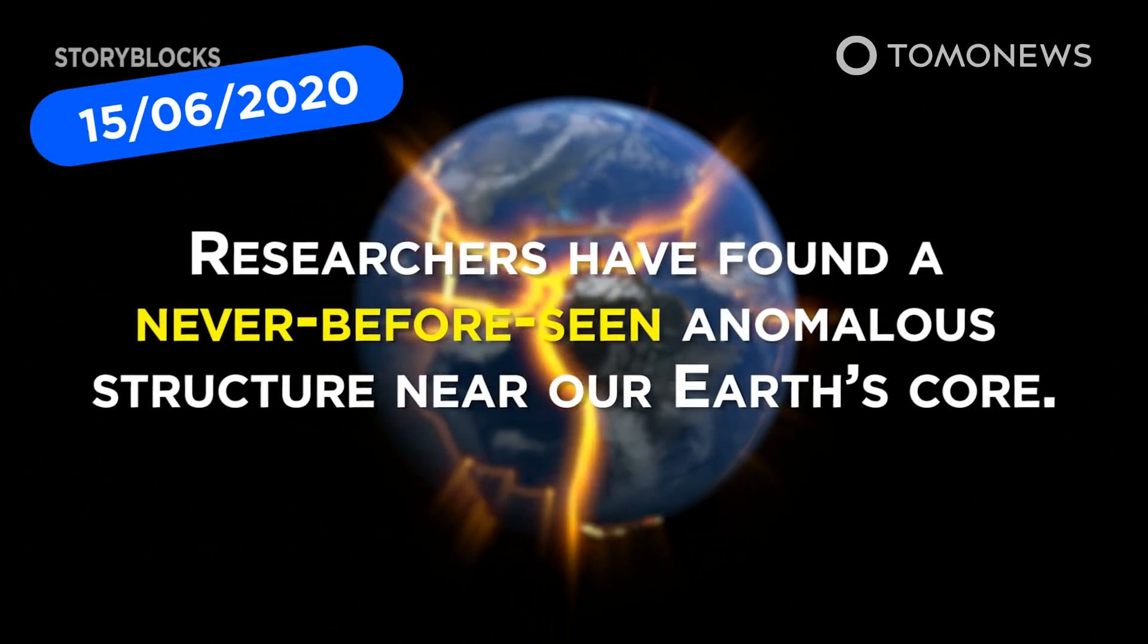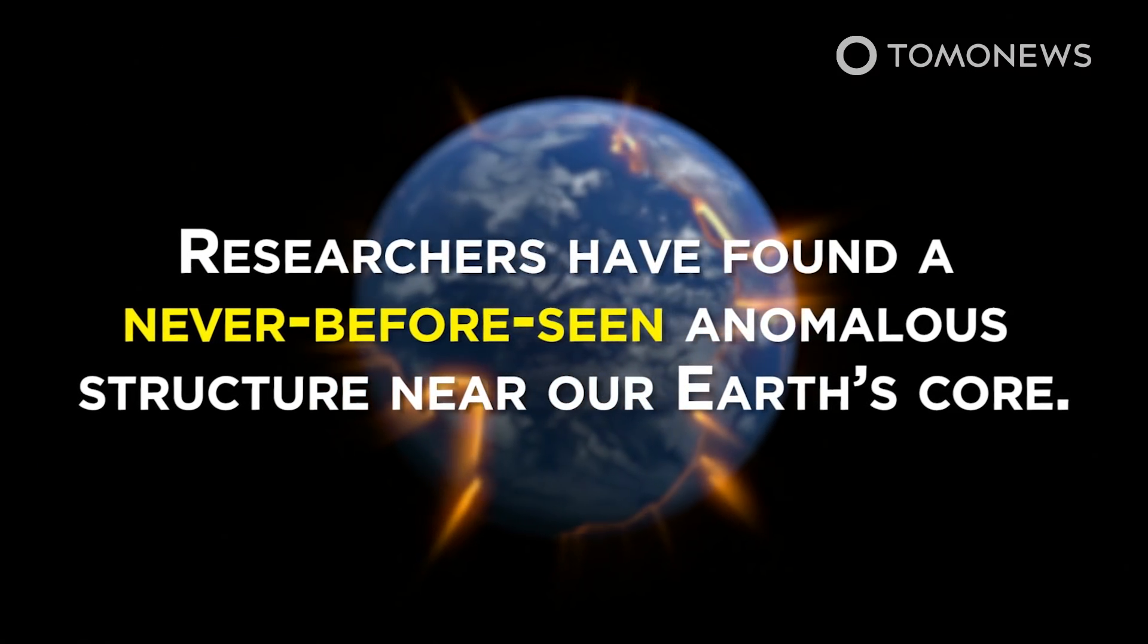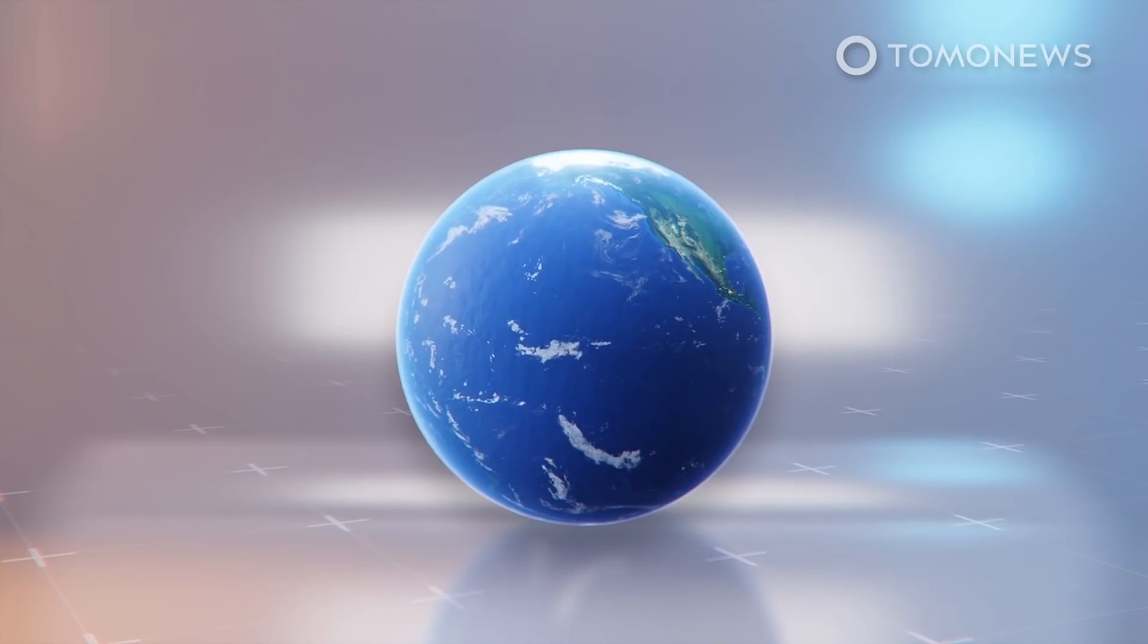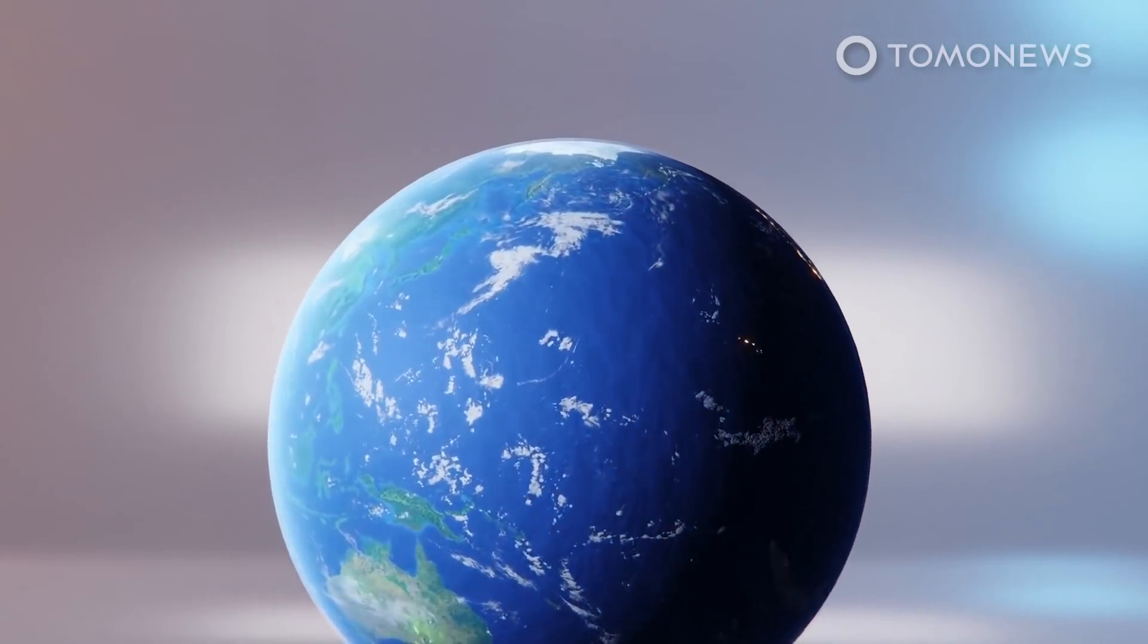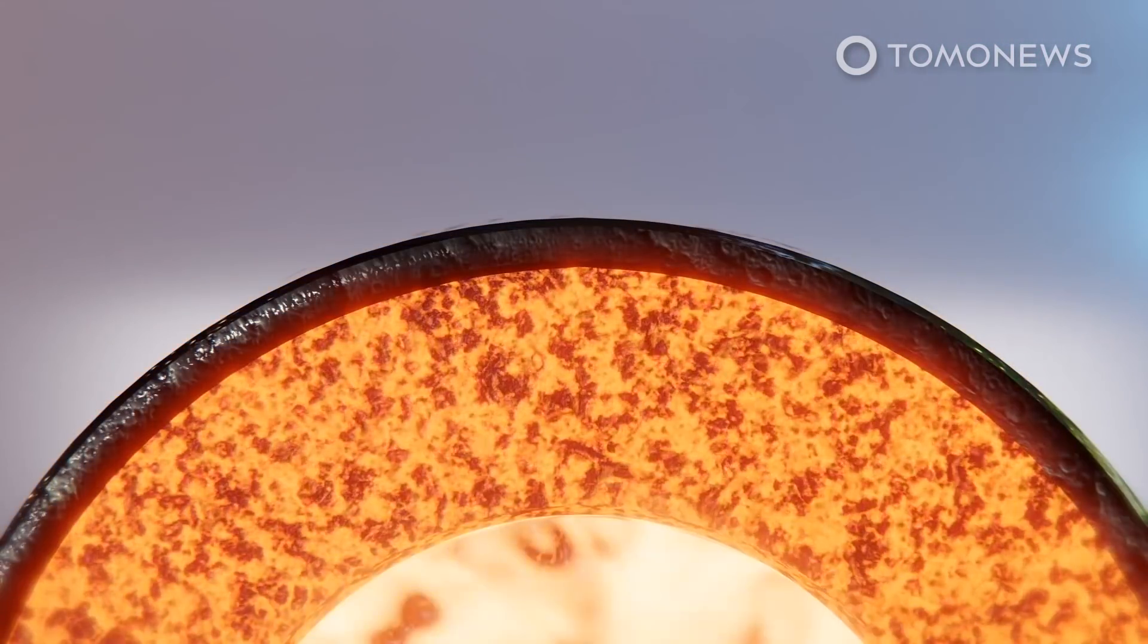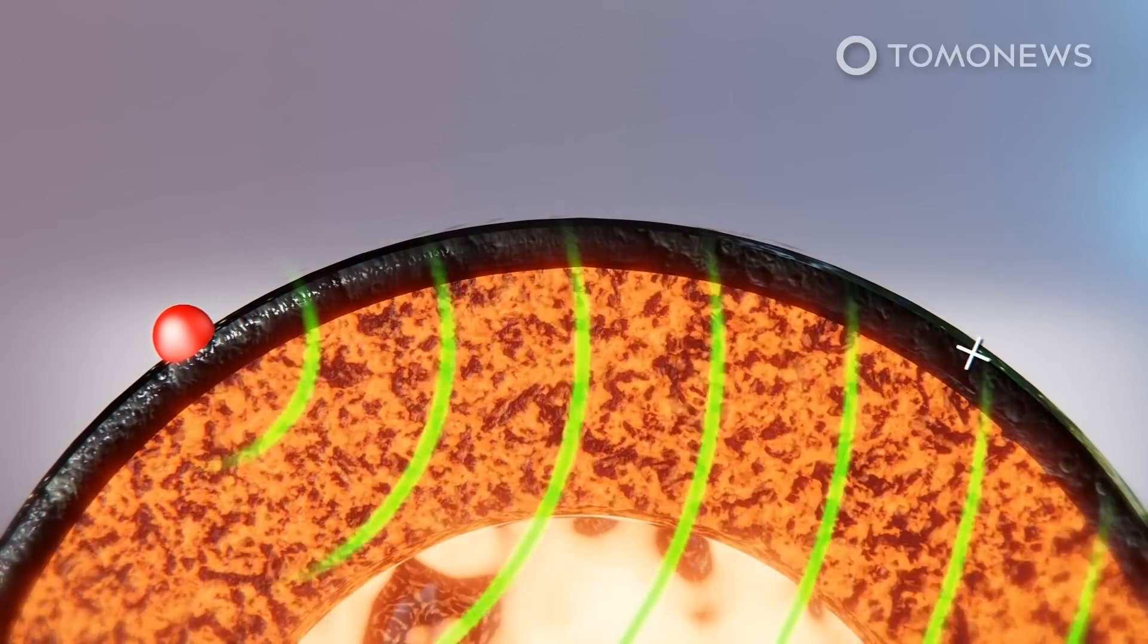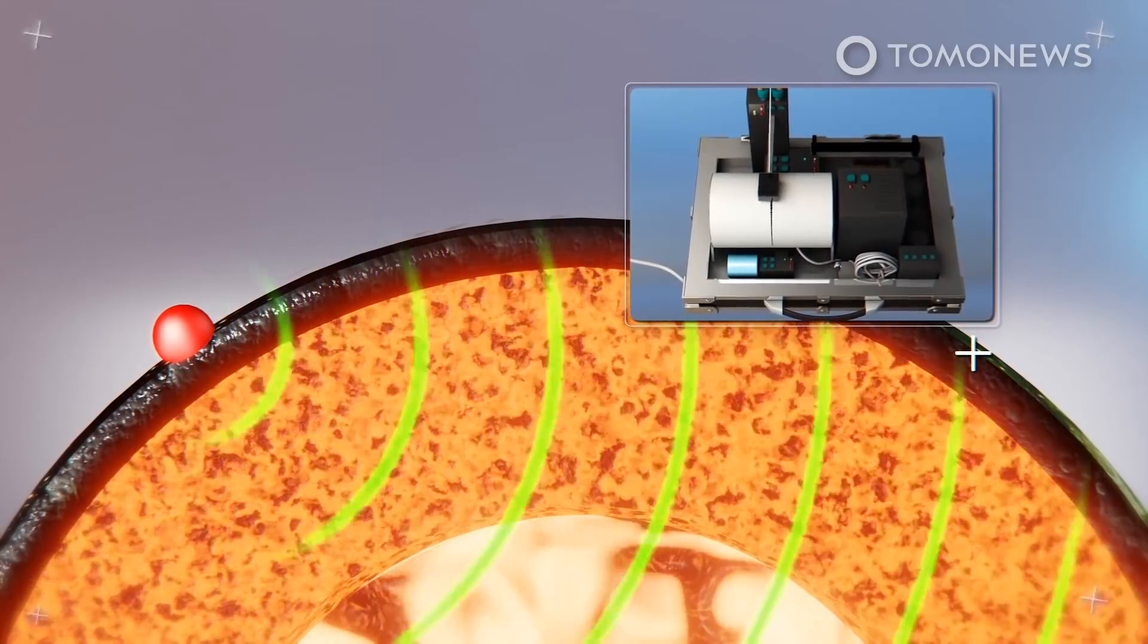Researchers have found a never-before-seen anomalous structure near our Earth's core. Here is how they did it. Geophysicists from the University of Maryland analyzed seismic waves around the world and found large unusual structures near the Earth's core. The study was published on June 12 in the journal Science. The team of researchers analyzed 7,000 seismograms from earthquakes of 6.5 magnitude or greater that occurred from 1990 to 2008 using Sequencer, a machine learning algorithm.